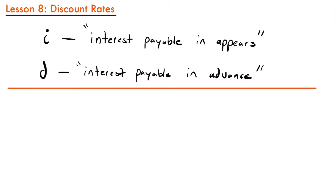Up until this point when we have been working with interest rates, our interest has either been paid or charged at the end of a period. We call this type of interest 'interest payable in arrears' — it simply means we are getting paid or charged interest at the end of a period rather than the beginning. But if interest is paid or charged at the beginning of a period, that is called 'interest payable in advance,' and that is what a discount rate is.